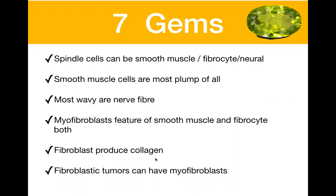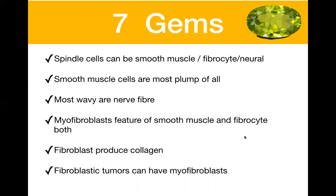Though fibrocytes do not express any immunomarkers, myofibroblasts are going to express smooth muscle antigen (SMA), which is specific for smooth muscle fibers. So a myofibroblast is a fibrocyte which, in addition to producing collagen, has also acquired some features of smooth muscle — it is an intermediate fiber. Fibroblastic tumors will usually have, in addition to fibrocytes, some myofibroblasts, so there will be some areas that are SMA positive. Though it will not be diffusely SMA positive as in smooth muscle fibers, in all fibroblastic tumors there will be some patchy expression of SMA due to the presence of myofibroblastic cells.